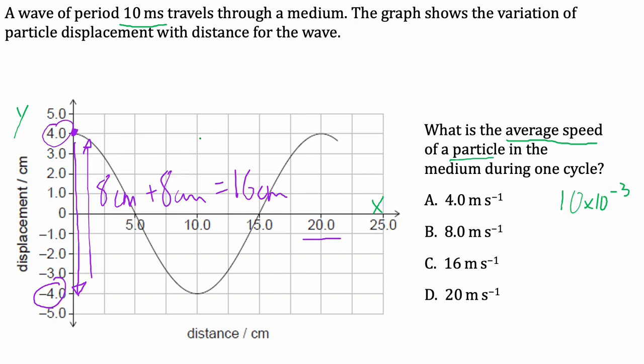So if we're looking for average speed, that would be the distance travelled by the time. The distance is 16 centimetres and the time period to do that is one cycle, which is 10 milliseconds.